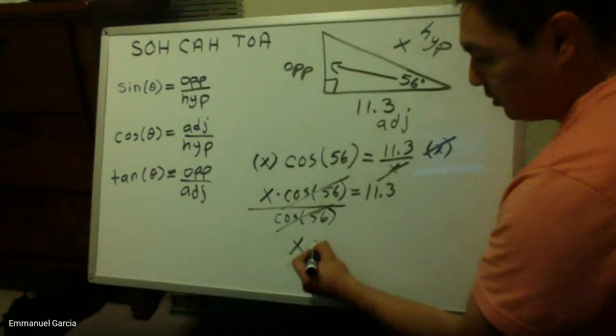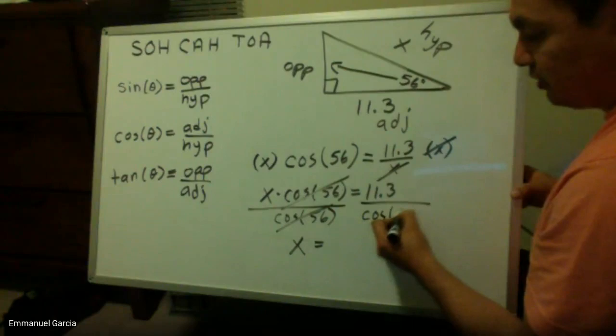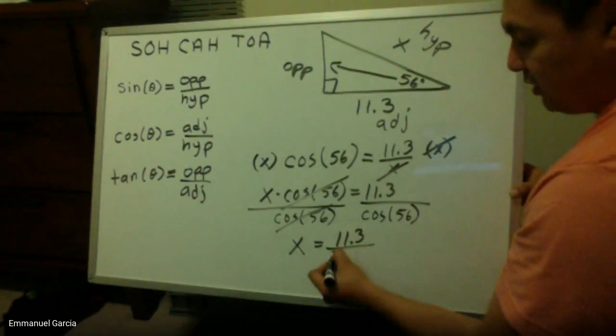So that cancels with that. So I have my x value. And I also need to do the same thing on both sides. So I will divide by cosine of 56 degrees on this side. So my x equals 11.3 divided by cosine of 56 degrees.